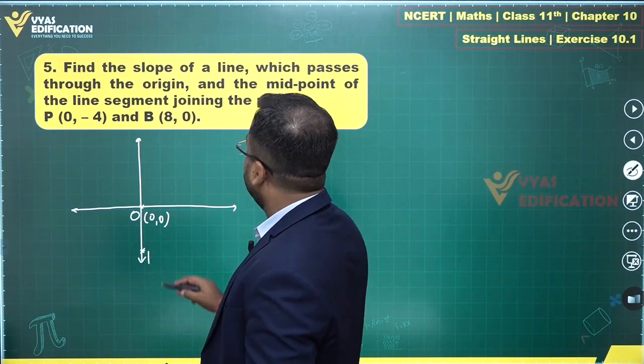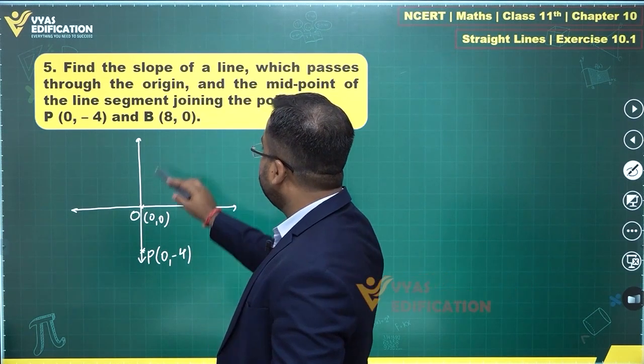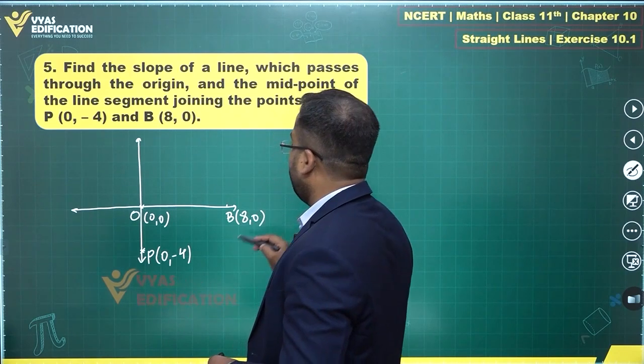Let's call this P, zero comma minus four, and B is eight comma zero. Let's mark B over here. Eight comma zero.